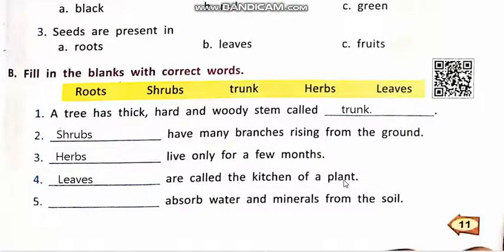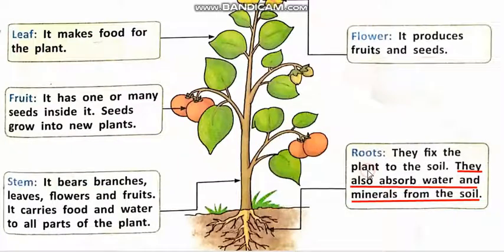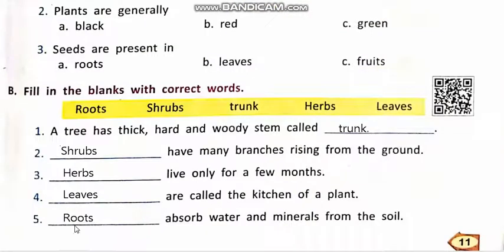Leaves are called kitchen of plant. Number 5. Dash absorb water and minerals from the soil. Roots — they also absorb water and minerals from the soil. Roots absorb water and minerals from the soil. Zameen se paani aur minerals ko absorb karte hain. Roots jo hain, wo paani aur minerals ko absorb kar ke laate hain.